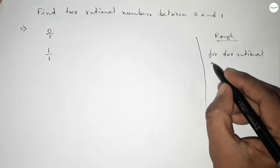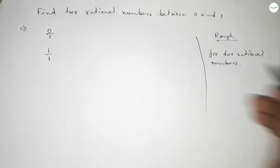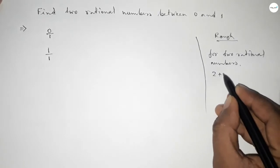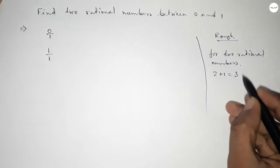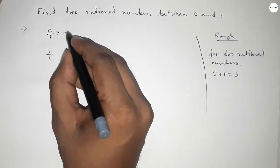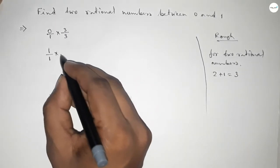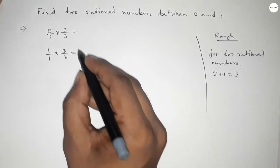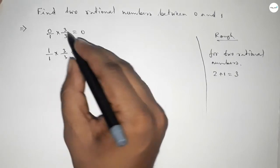Now for finding two rational numbers between any two numbers, we have to follow this method. We should multiply both numbers by 2 plus 1 equal to 3, with both numbers up and down by this way. So multiplying with 0, this is 0, and here 3 over 3.